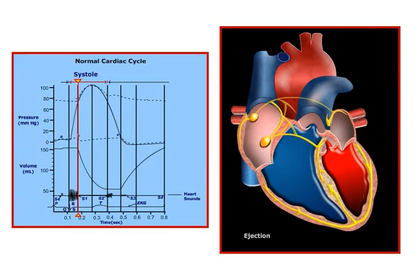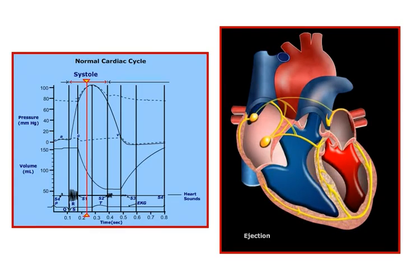Ventricular ejection of blood during systole begins once the pressure in the ventricles exceeds the pressure in the aorta and pulmonary artery, which causes the aortic and pulmonic valves to open. With the aortic and pulmonic valves now open, and the ventricles continuing to contract, the ventricular pressure further increases, resulting in a rapid ejection of blood.